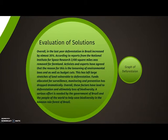The overall evaluation of the solutions. Overall, in the last year, deforestation in Brazil increased by almost 30%. According to reports from the National Institute for Space Research, 3,100 square miles was removed as farmland. Activists and experts have agreed that the reason for this is the loosening of environmental laws as well as budget cuts, leaving large stretches of land vulnerable to deforestation. Funds allocated for surveillance, monitoring, and prevention have dropped dramatically as well.